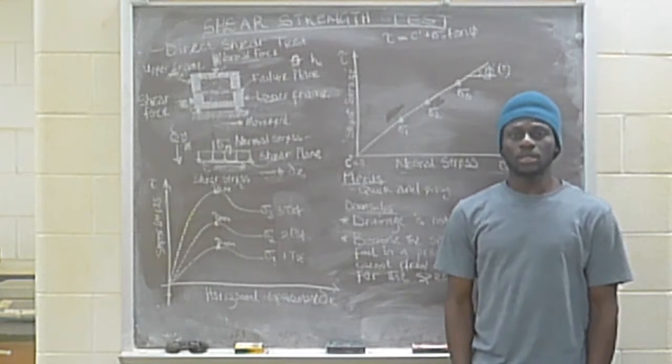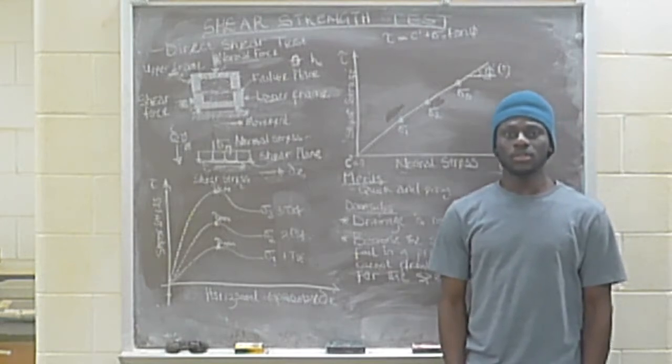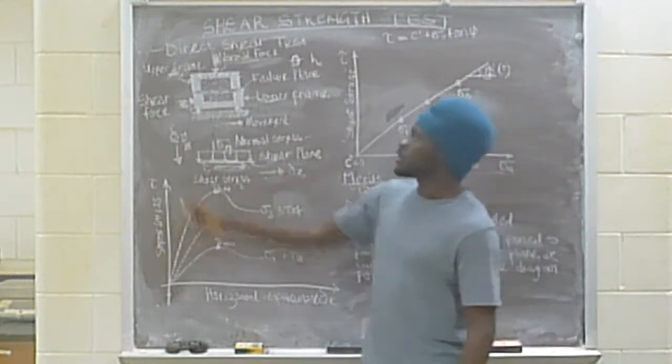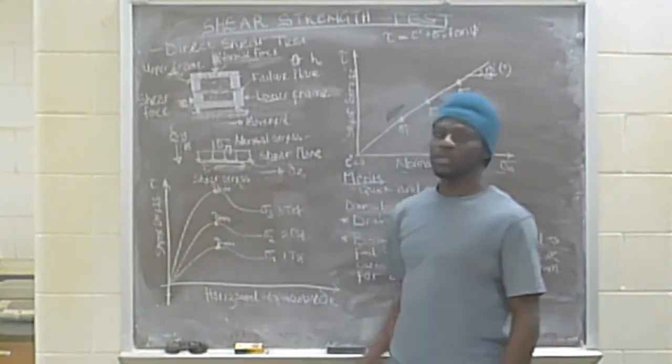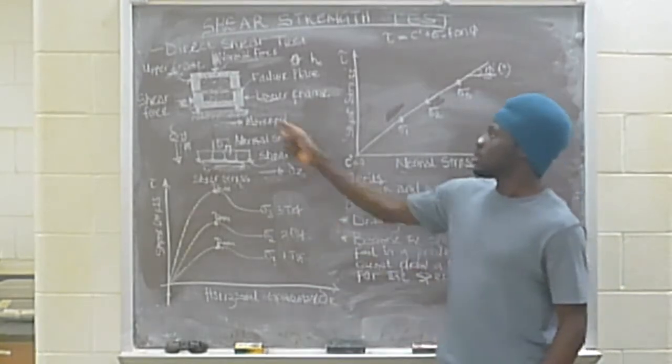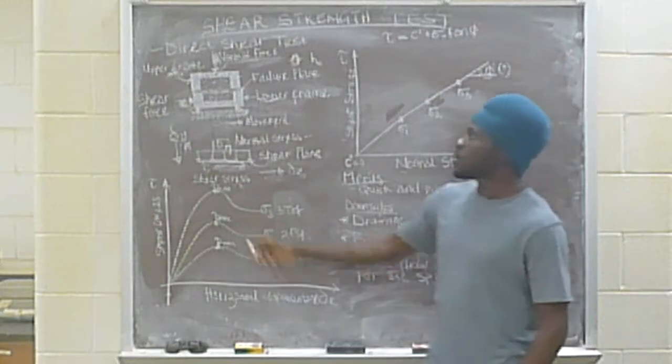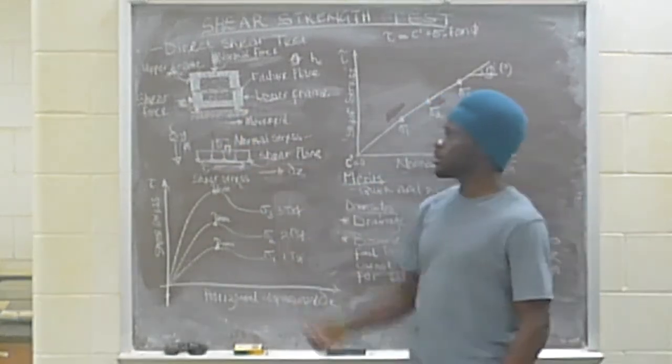The shear box has an internal diameter of 2.5 inches and an average specimen height of 1 inch. The shear box has an upper frame which is fixed and not allowed to move and a lower frame which is allowed to move in the horizontal direction by means of some rollers attached here at the base.